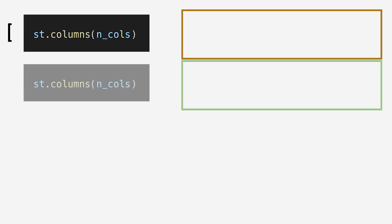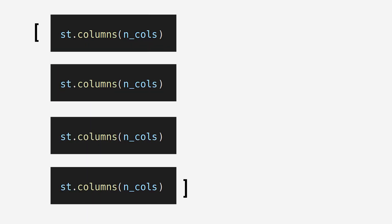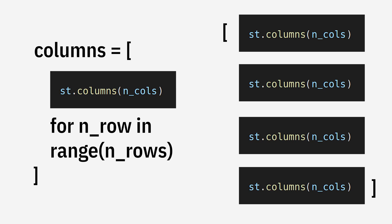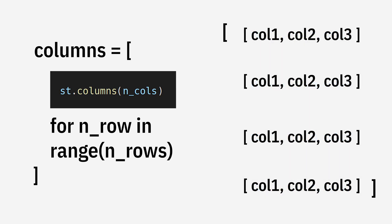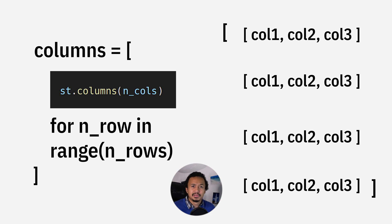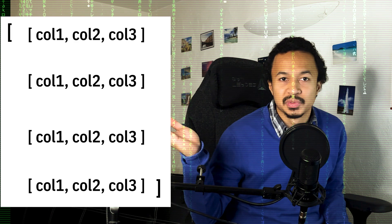Every time we call st.columns, a new row is generated. Let's create a list of rows, each row containing a list of columns — so it's like a 2D matrix of sorts.